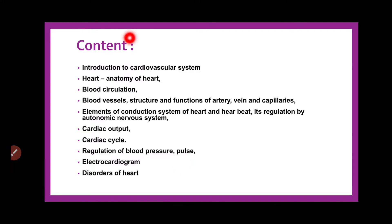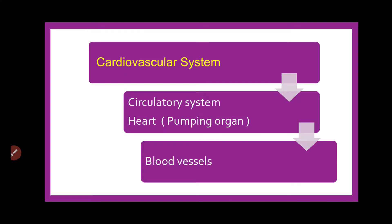These are the various parts of the cardiovascular system which we are going to discuss in detail in the coming parts. To start with today's introduction to the cardiovascular system — if you will see, there are different systems: reproductive system, nervous system, lymphatic system — they all comprise of some or the other parts. Same way, the cardiovascular system also comprises of the actual circulatory system, that is the heart and the blood vessels.